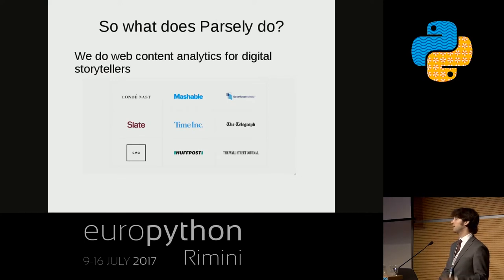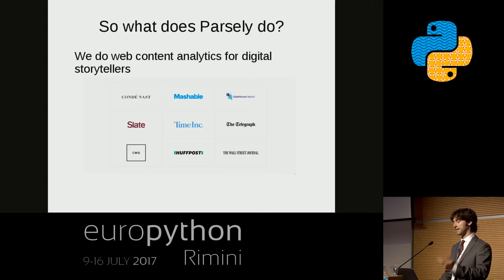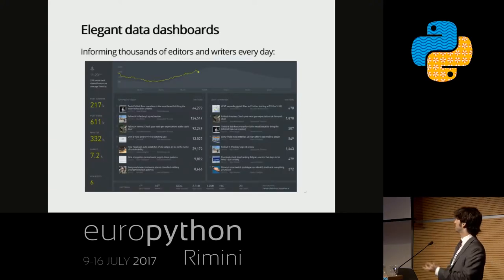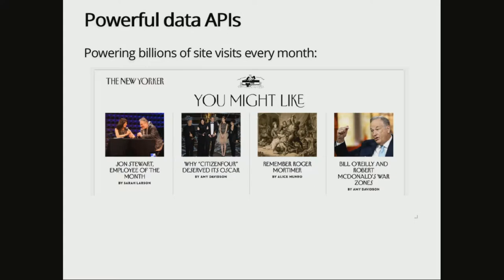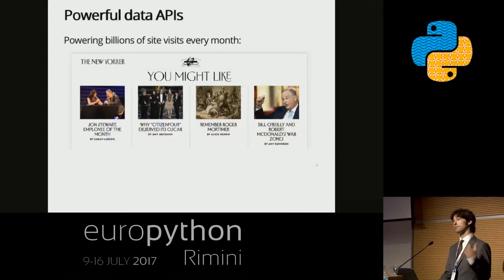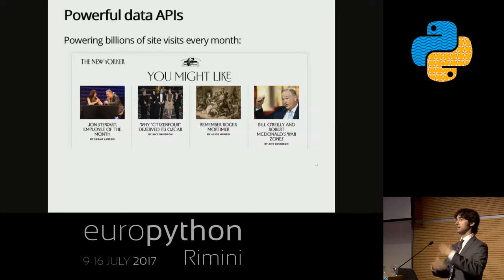A quick background on us and what we use Storm for: we are a web analytics company doing content analytics for digital storytellers like Condé Nast and Mashable. We ingest tons of page view and heartbeat event data for these publishers so they can track visitor loyalty, engage time on page, and page views for sections, tags, or posts. We use this data to power dashboards for editors and writers, on-site APIs for trending or popular content widgets, and recently a data pipeline giving customers access to our raw data to build their own products.